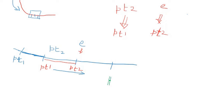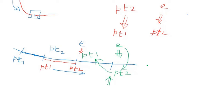Now consider the user is further dragging the mouse. When they drag further, one more mouse event is produced. This new position becomes PT2 and the previous PT2 becomes PT1. So we move PT2 to PT1, then set the new position as PT2. PT1 and PT2 are now available to graphics, and this will perform drawing between PT1 and PT2.